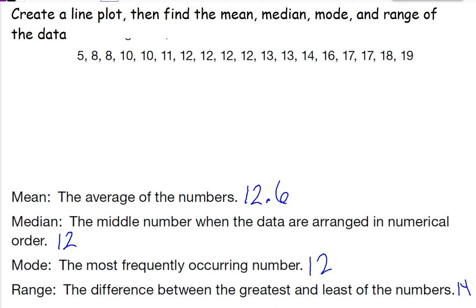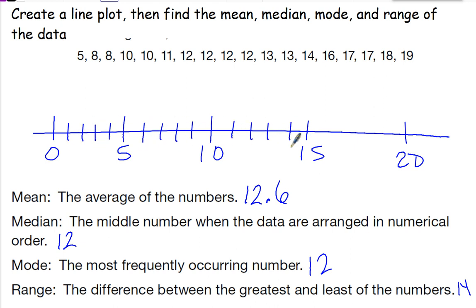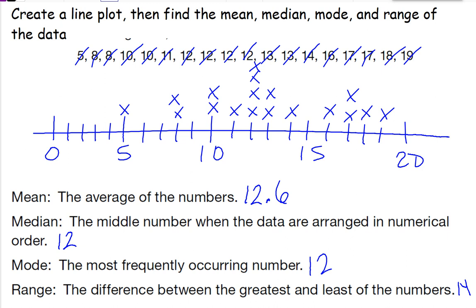Now I'm going to go ahead and draw that line plot. It's a good review. Starting at zero, I'm going to go up by fives. So I have one five, two eights, two tens, one eleven, four twelves, two thirteens, one fourteen, one sixteen, two seventeens, one eighteen, and one nineteen. This helps us see that the mode, or the number that's repeated the most, really is 12, because it's the highest column.